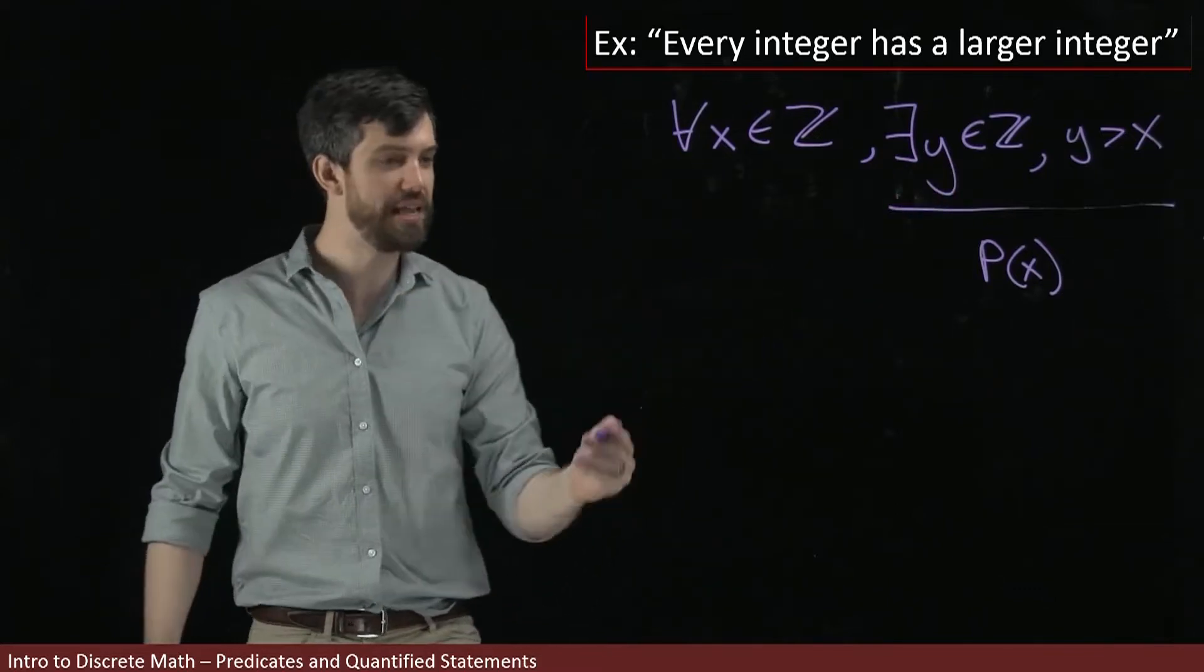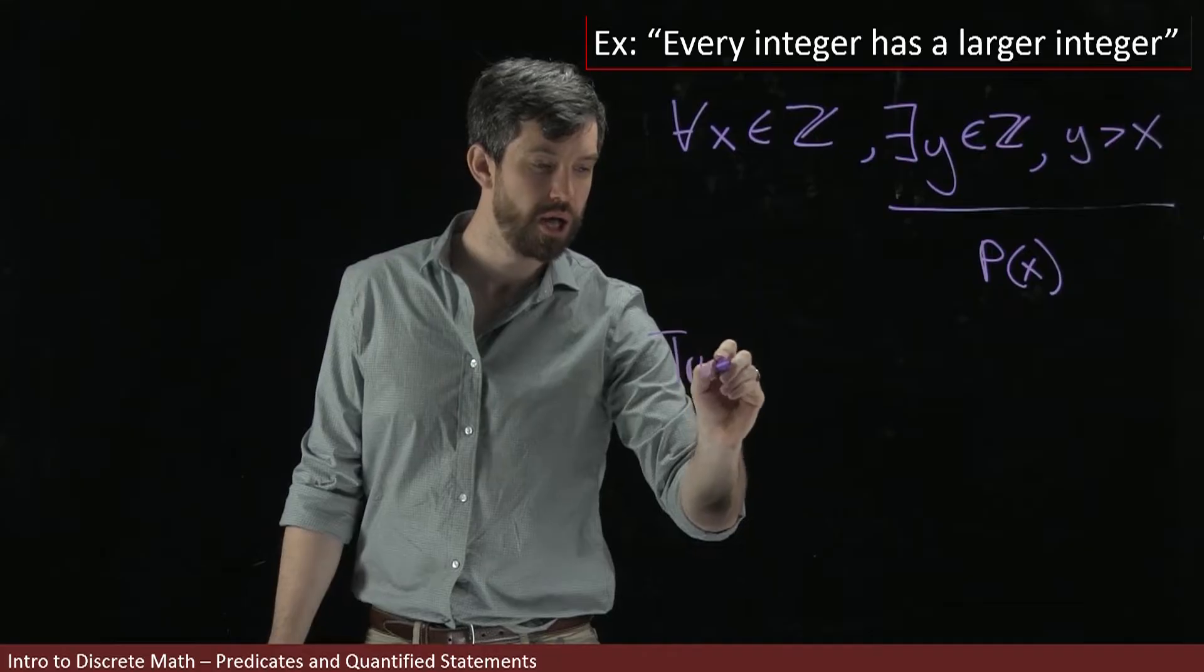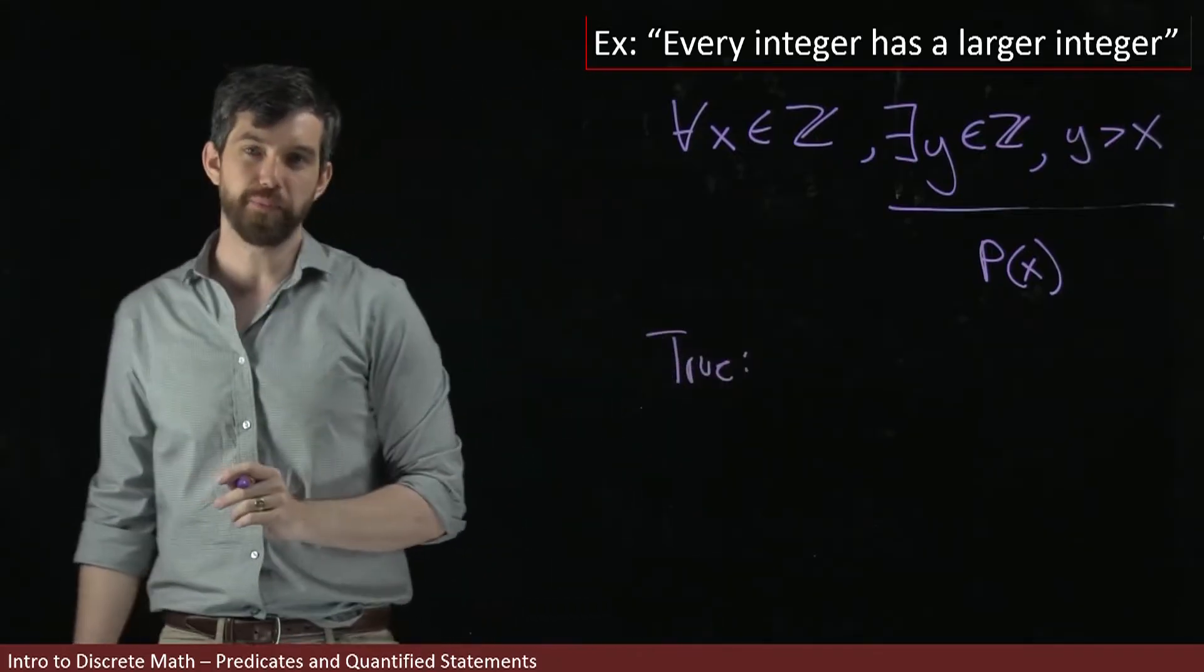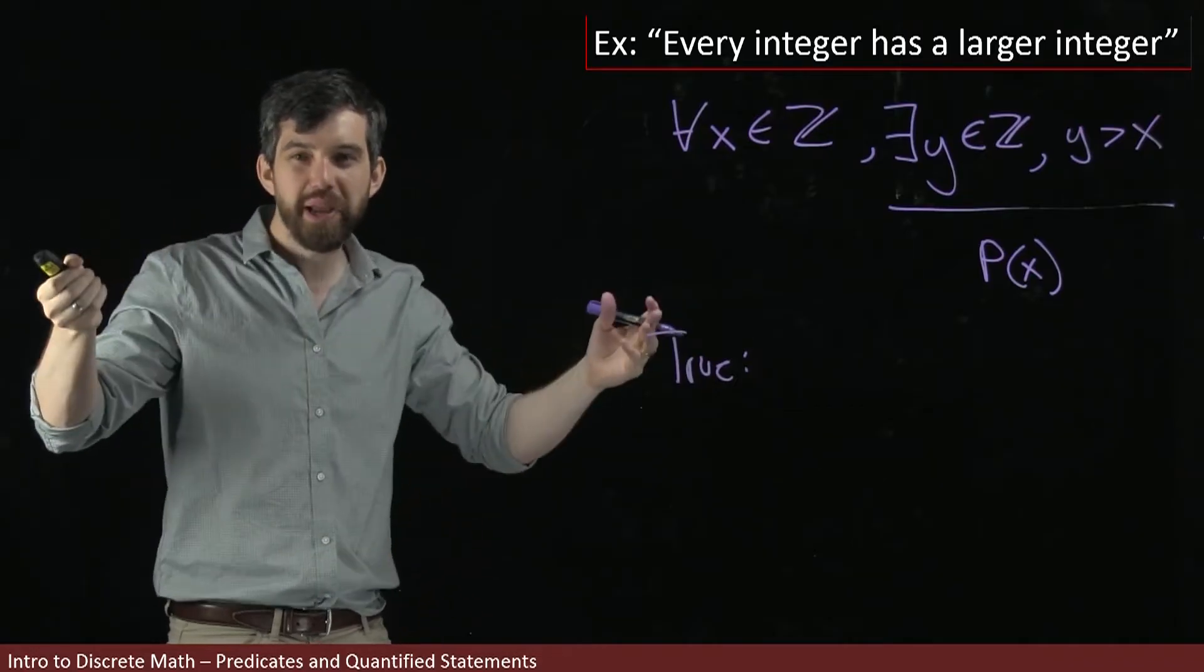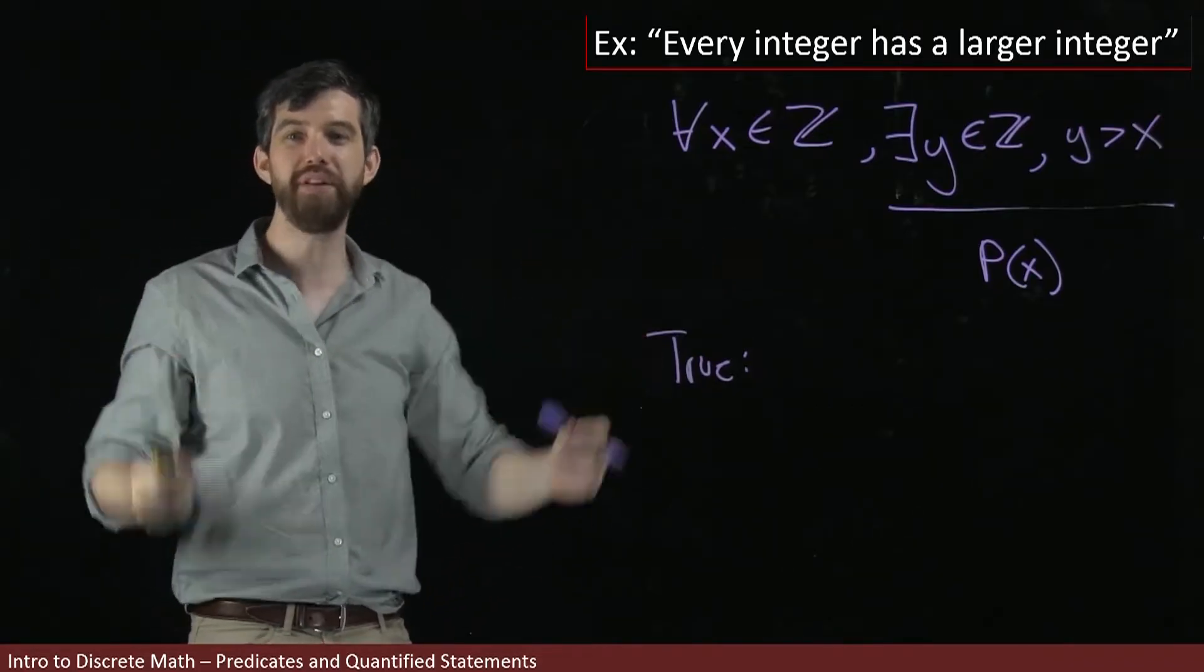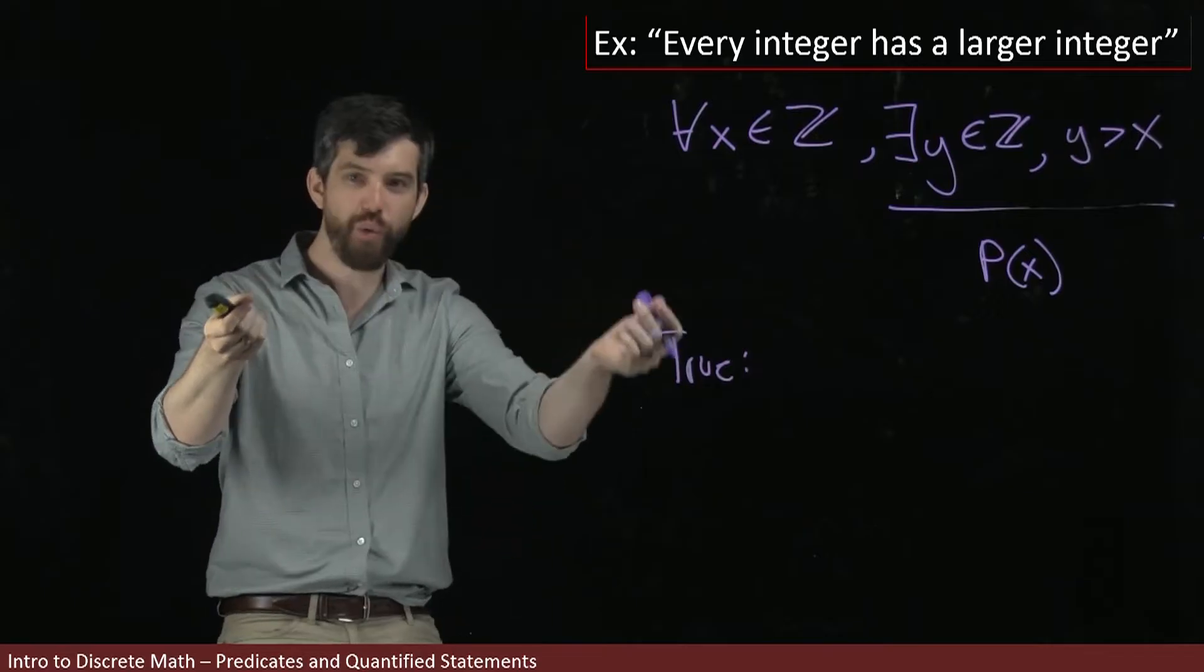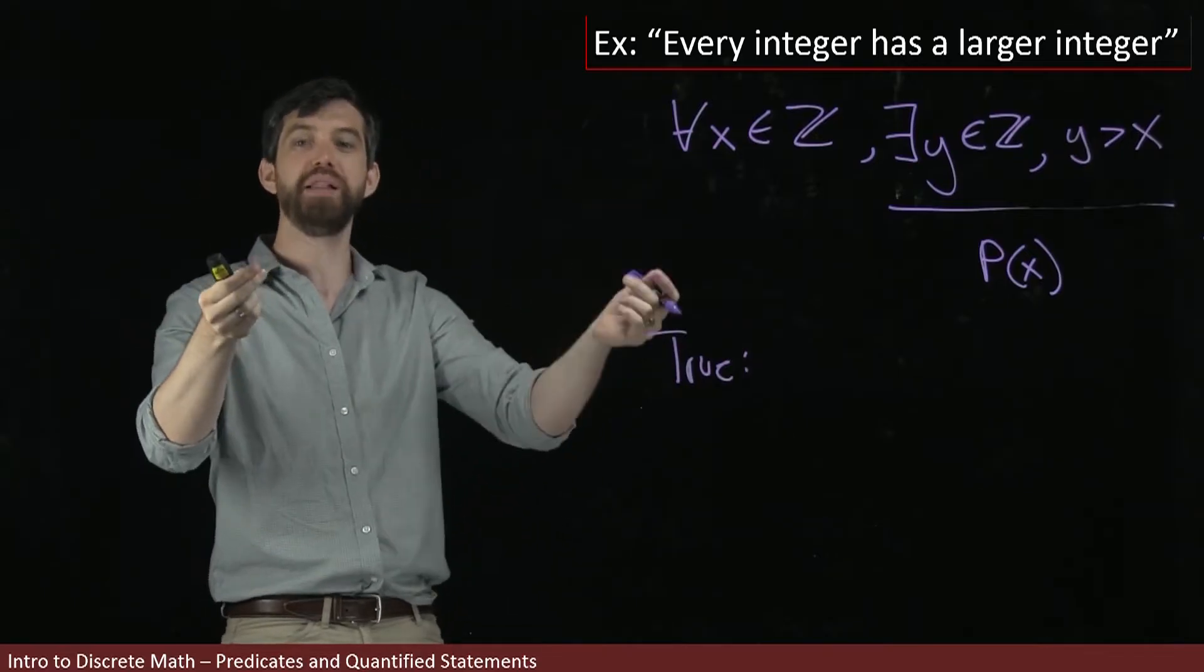By the way, this statement is indeed true. Why? Well, if you take a specific x value, then how do you find a bigger one? What about just adding one to it? Like if you choose 100, 101 is bigger. If you choose a million, a million and one is bigger.